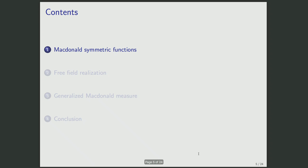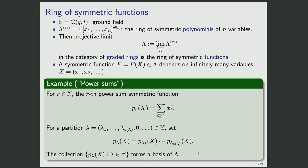In the first part, let me introduce some very basic theory of symmetric functions. I fix the ground field to be F, which is the field of rational functions of Q and T. We write Lambda_N for the ring of symmetric polynomials over F in N variables. Then the ring of symmetric functions, denoted Lambda, is constructed as its projective limit in the category of graded rings.